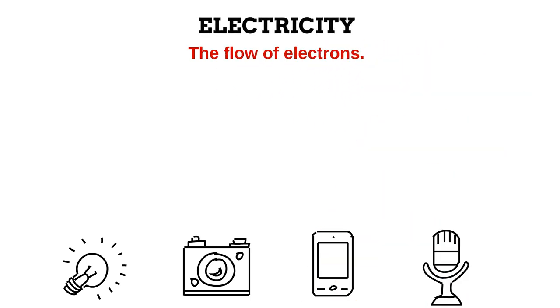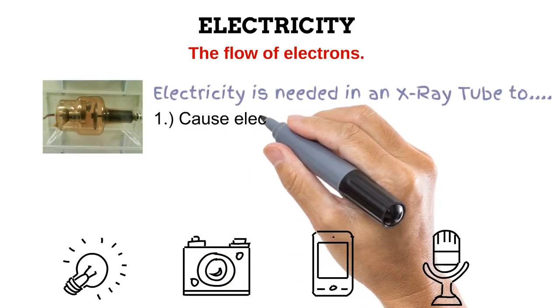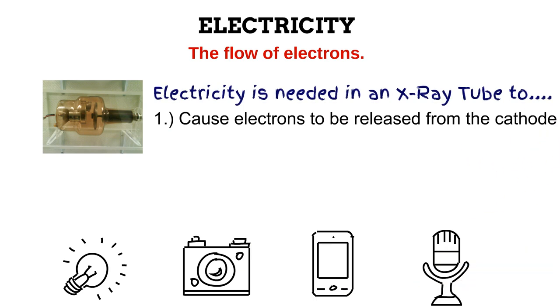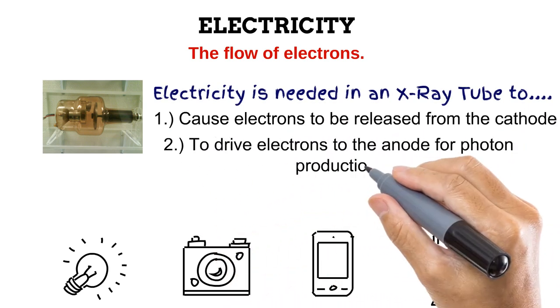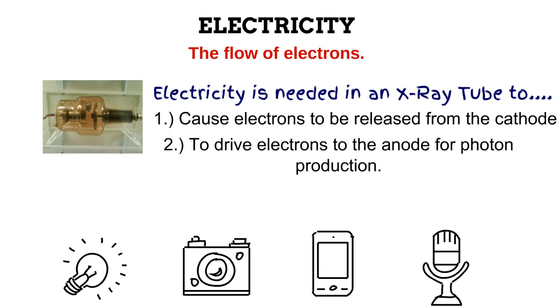Electricity is basically the flow of electrons. This flow of electrons produces electrical energy. The X-ray tube is another device that needs energy from this flow of electrons. Electricity is needed in an X-ray tube to cause electrons to be released from the cathode and to drive these released electrons to the anode for photon production. In the next couple of videos, you will learn why these processes are important to radiography.